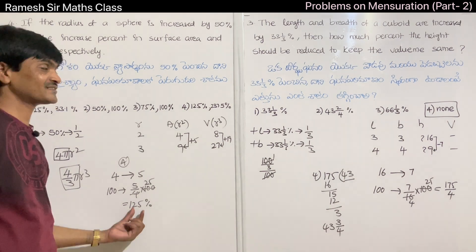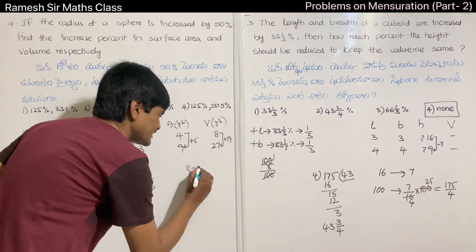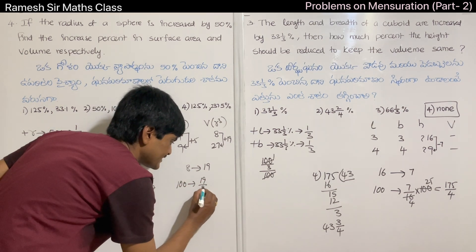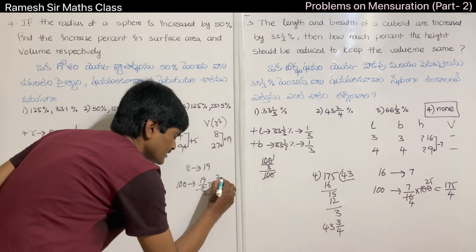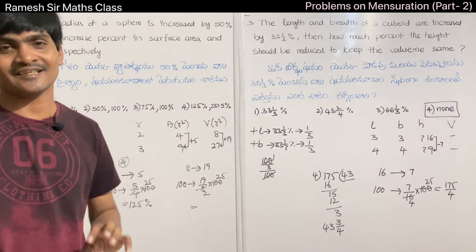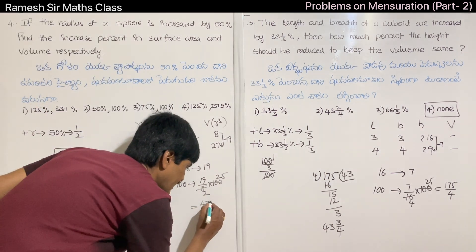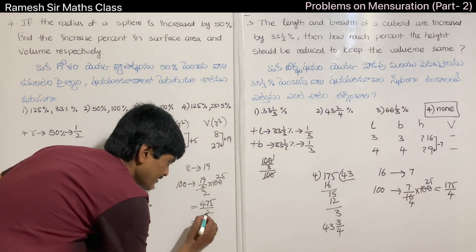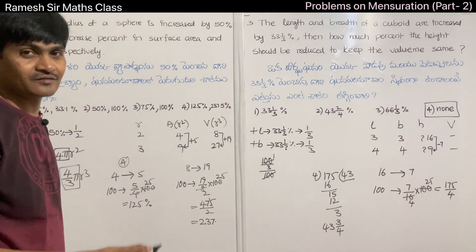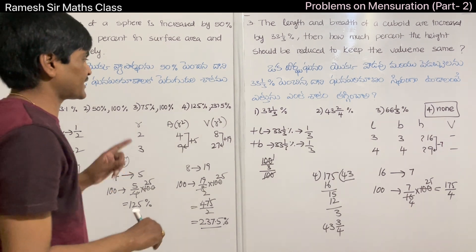For volume: original is 8 units, new is 27 units — increase of 19 units. Percentage = (19/8) × 100 = 1900/8 = 237.5 percent increase. The correct answer is the 4th option.